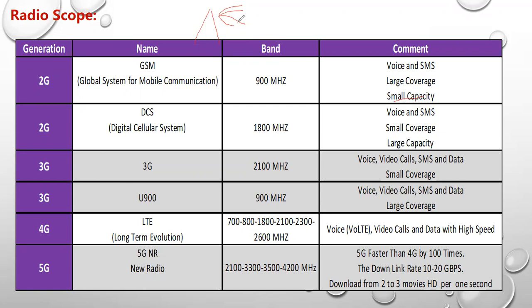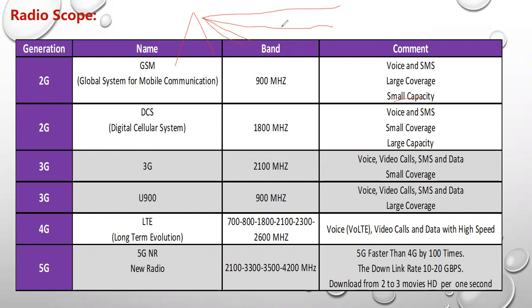So 2G came with these two bands and made a very good move. The GSM at 900 MHz served faraway people with large coverage, and the DCS served close people with large capacity. Together they covered the entire area by 2G. And because of this 2G, we could all actually use mobiles.